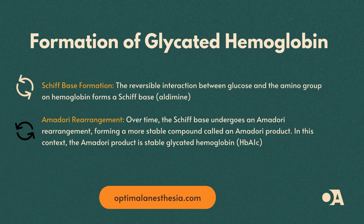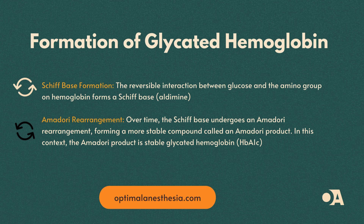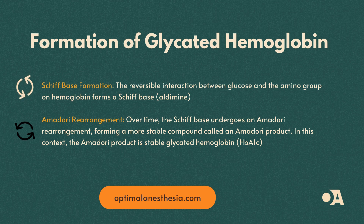Now let's get into how this process becomes permanent. Schiff base formation: the reversible interaction between glucose and the amino group on hemoglobin forms a Schiff base, also known as aldimine — like a sticky note that sticks a bit better. Amadori Rearrangement: over time, this Schiff base undergoes a chemical transformation called the Amadori Rearrangement, creating a more stable compound — turning our sticky note into a super glue bond. This stable form is called glycated hemoglobin, or HbA1c.